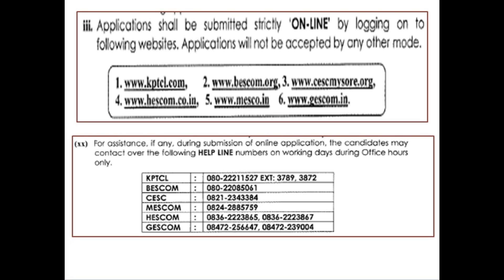You will need to apply through the application portal and find the new application details. Click on the app, continue, and download the full notification. If you need to check your percentage or eligibility details, please click on the application.